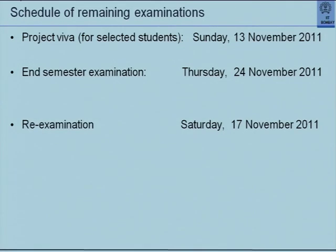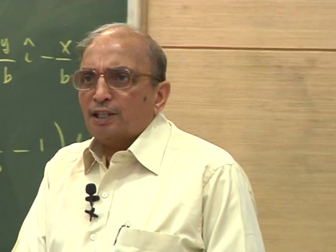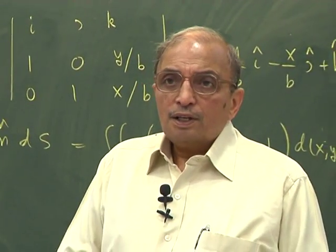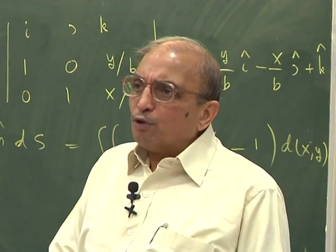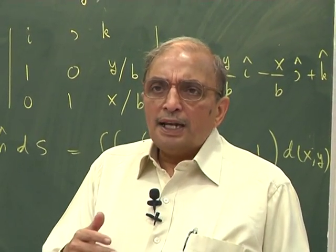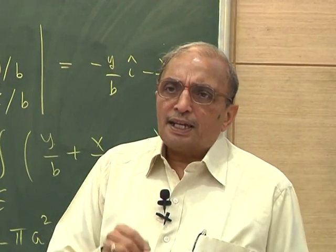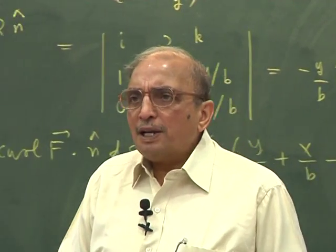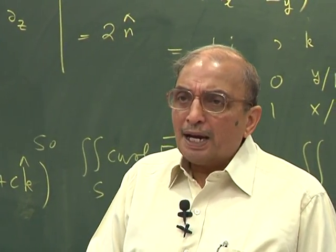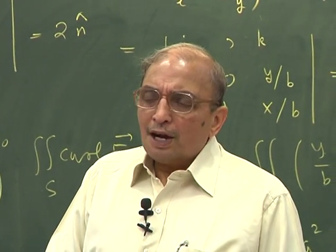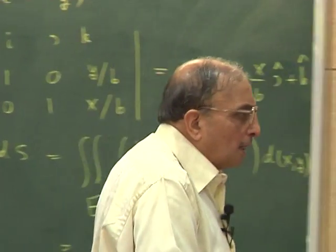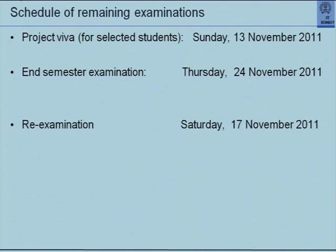The schedule of remaining examinations: Project Viva for selected students is Sunday 13 November; end semester examination is Thursday 24 November. I am also putting up the re-exam schedule. One student has broken his hand and will need the re-exam as his main exam. The re-exam is typically in December; the Senate has resolved all re-examinations must be completed and grades submitted to the academic office by 21st December. I am trying to keep the re-exam date close to that — Saturday 17th December.